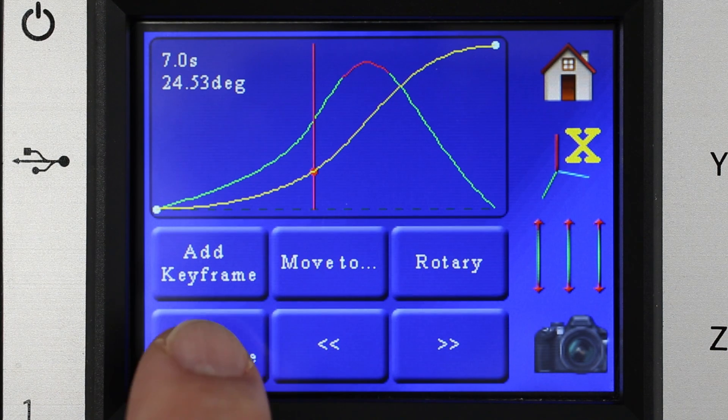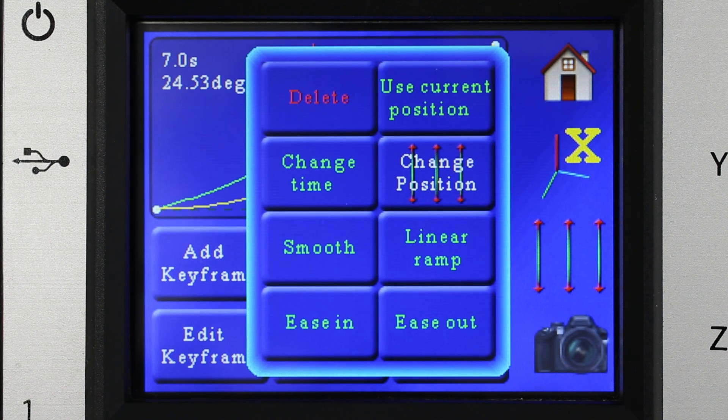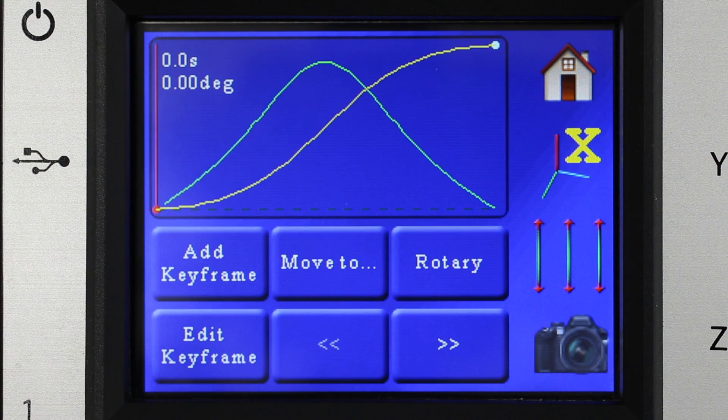If we want to remove a keyframe we just do edit and delete and then it's gone and we're still left with the same time. It's the same approach if we want to change the end position. We don't want to go through the helper process and answer all the questions to change that one axis end position.